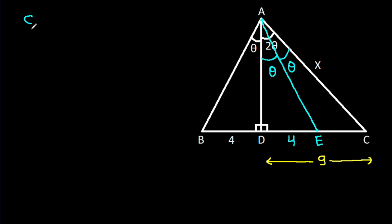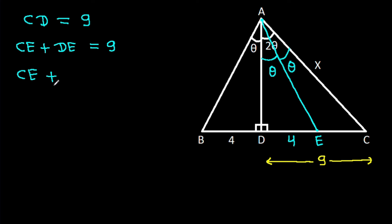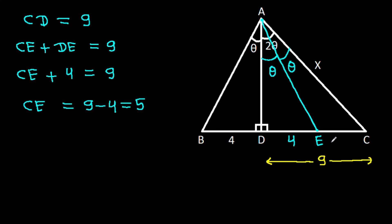Now, we have CD is 9, and CD equals CE plus DE, which equals 9. So CE equals 9 minus 4, that is 5. So CE is 5.